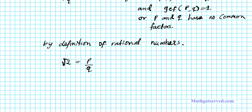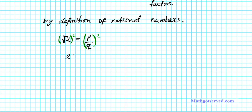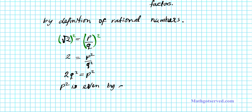Now let's go ahead and square both sides of our equation. We square the right side and the left side. That yields 2 equals p squared over q squared, because square and squared cancel out. Then multiplying both sides by q squared, we have 2q squared equals p squared. Since we have 2 times an integer equal to p squared, we can automatically conclude that p squared is even, by definition of even numbers.